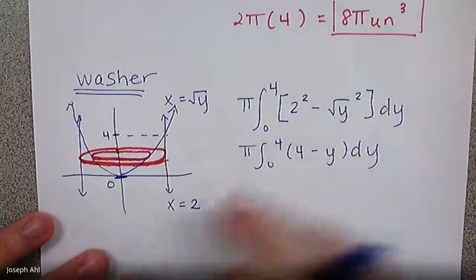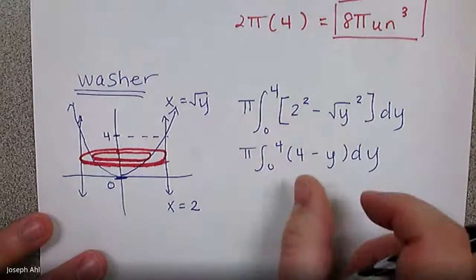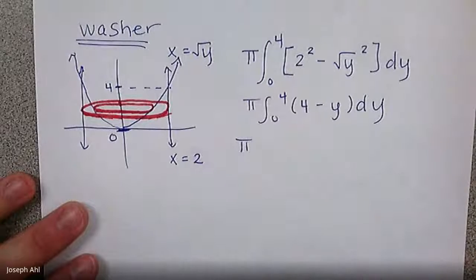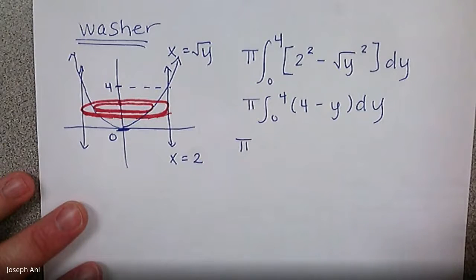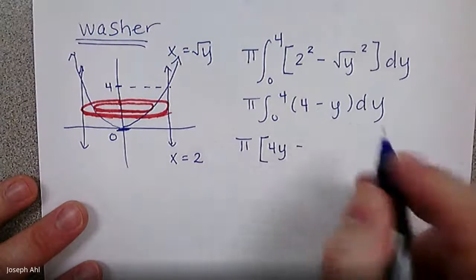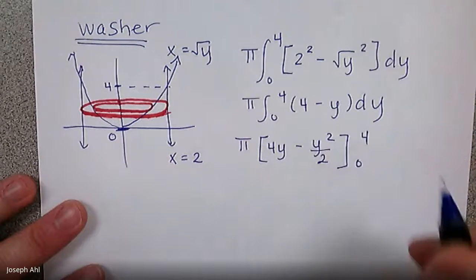So that one's not so bad either. When I compare the two functions that we've had to integrate, they've both been, I think, relatively nice expressions to find the anti-derivative of. So I don't think when you're comparing the methods that one was necessarily a lot easier than the other. But if I find the anti-derivative here, you get 4y minus y squared over 2 from 0 to 4.